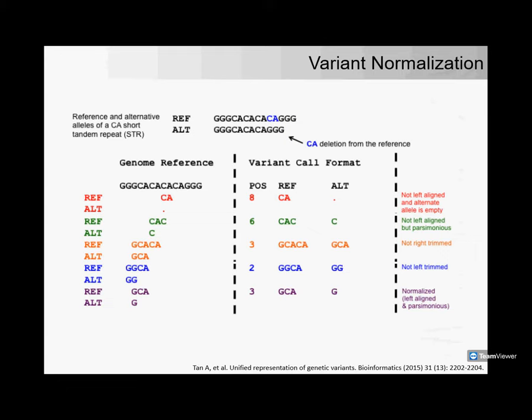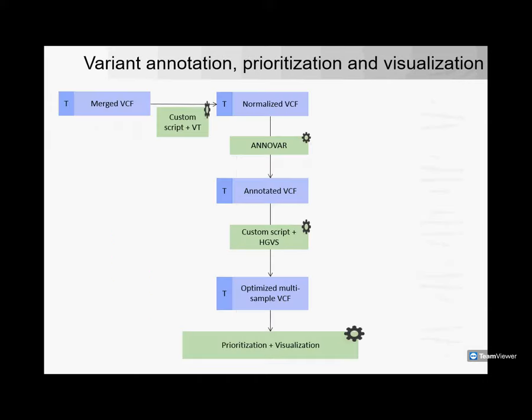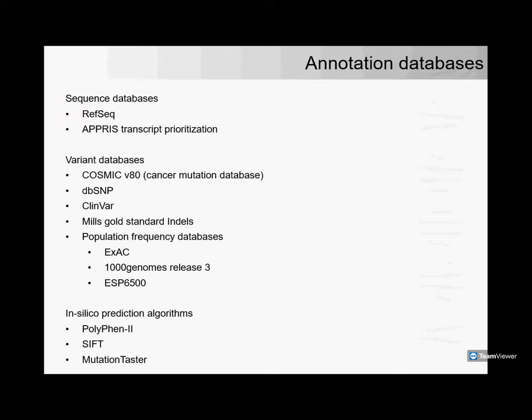After the merged VCF file is available, I use a custom script and the software VT to perform normalization. Followed by that, I use Annovar to annotate the VCF files. Subsequently, there's a custom script that cleans up some of the Annovar annotations and uses HGVS notation to formally put in the c-dot and p-dot annotations against the transcript. Then an optimized multi-sample VCF file is generated, put forward for prioritization and visualization. These annotation databases currently use about 80 to 90 gigabytes of space.